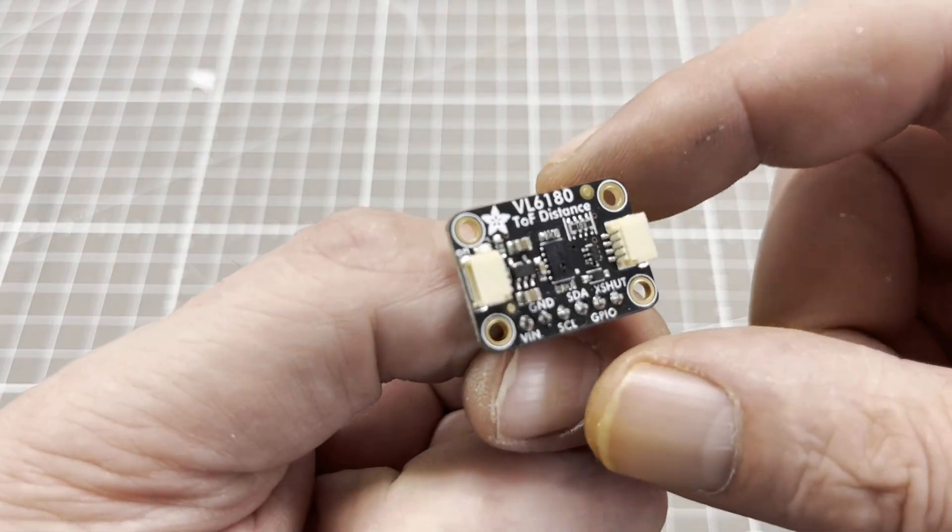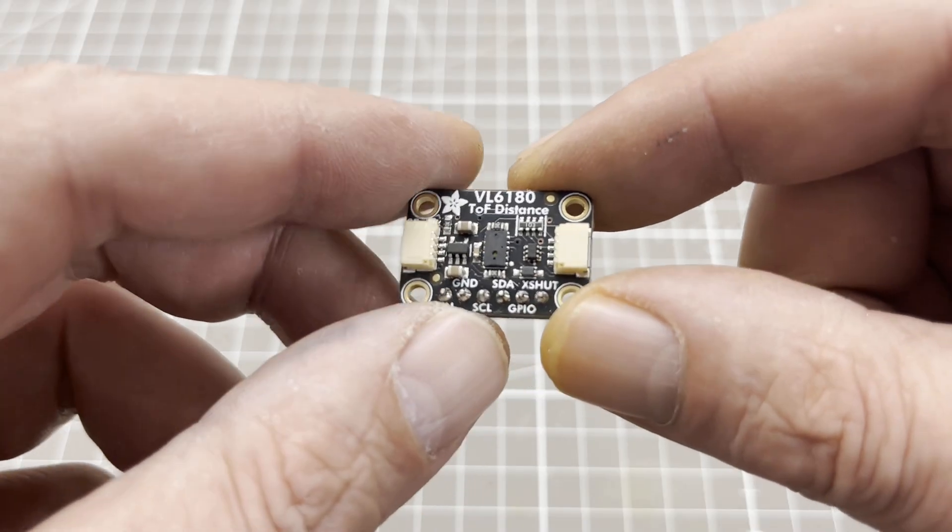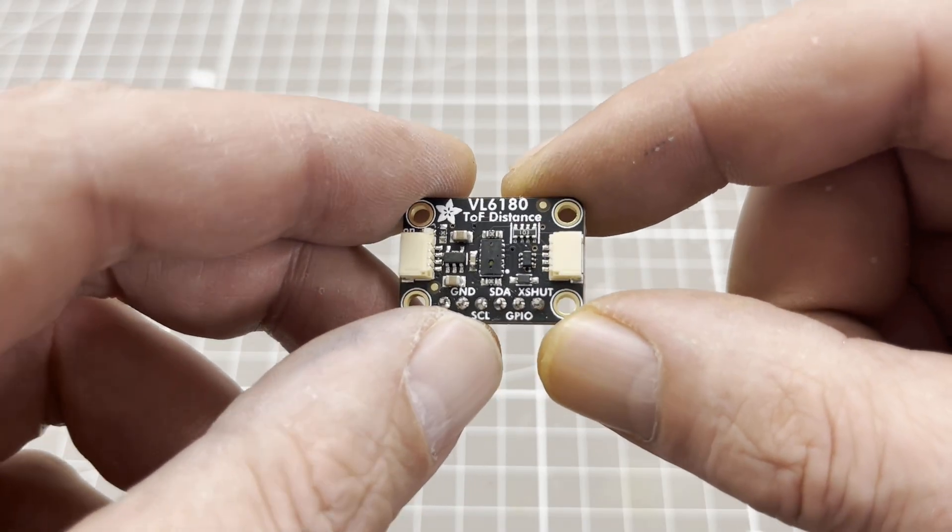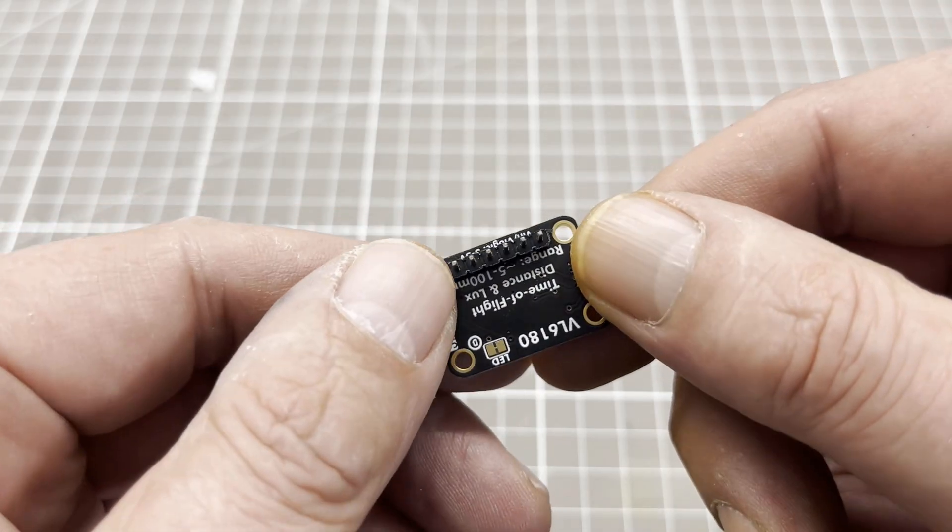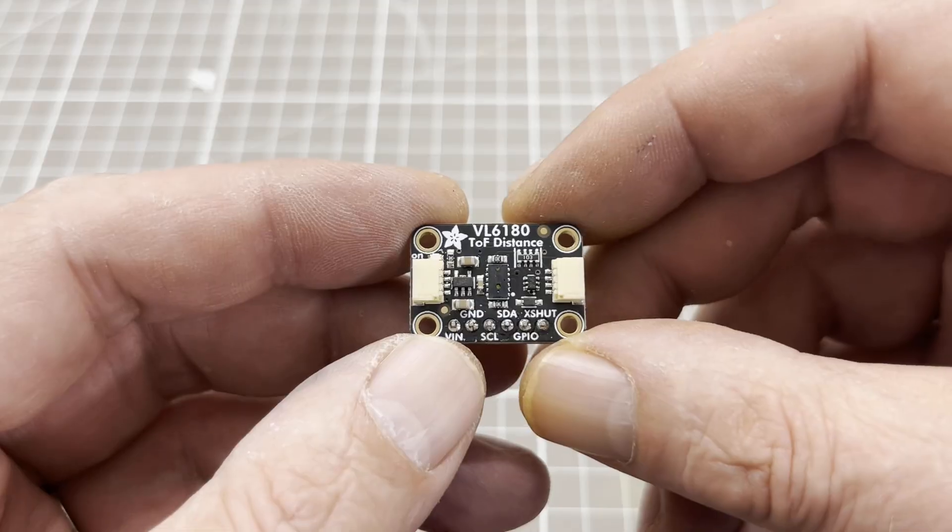The piston movement of the gas syringe is detected by a VL6180X time of flight sensor. The VL6180X is suitable for distances between 5 and 100 mm. The resolution is 1 mm.